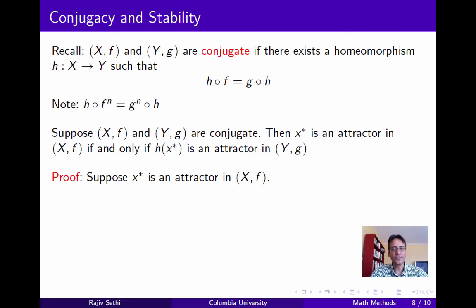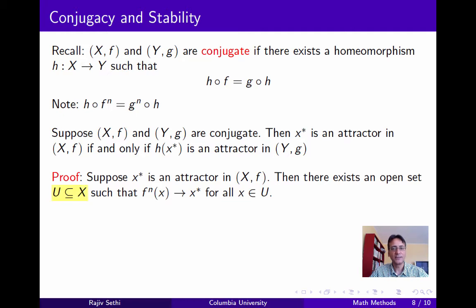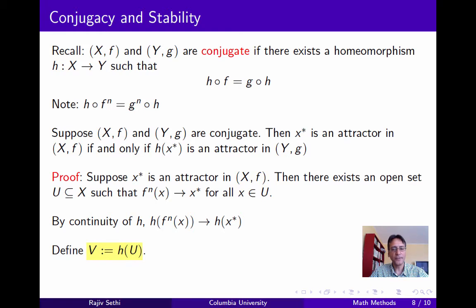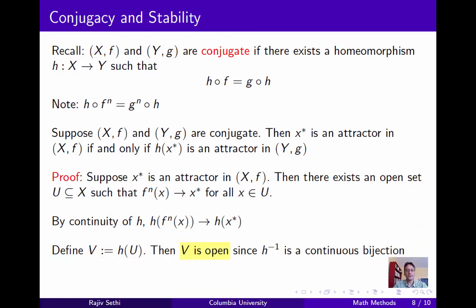So let's prove this. Suppose x-star is an attractor in the first system. Then there exists an open set u in x such that the orbit beginning at x converges to x-star for all points x in u — this is just the definition of an attractor. Now since the sequence fⁿ(x) converges to x-star, and h is a continuous function, the sequence of images of these points must converge to the image of x-star. Now define v as the image of u, and note that v must be open. And here we're using the fact that h is a homeomorphism, which means that both h and h-inverse are continuous bijections.